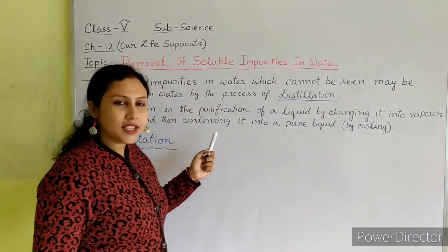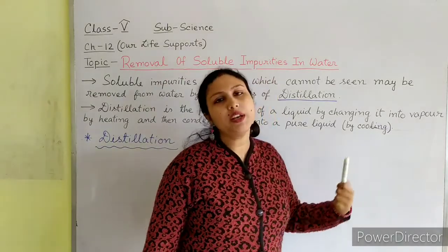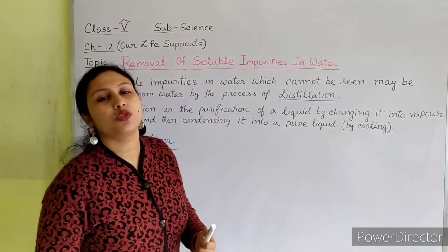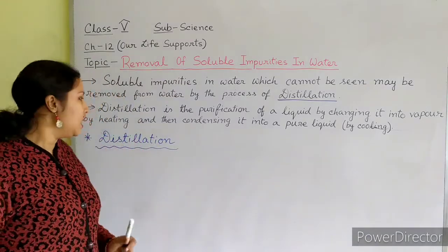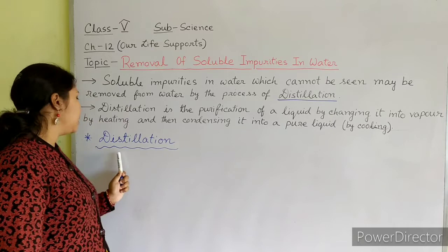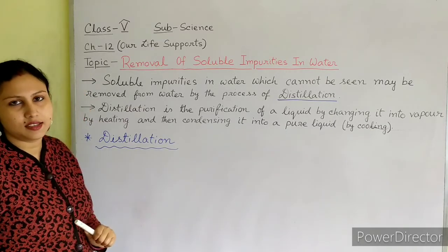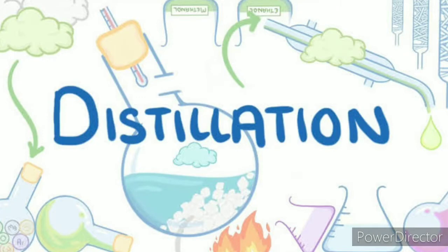So students, now we will learn in detail the process of distillation. In distillation, impure water is heated till it starts boiling. On boiling, the water evaporates and the impurities remain behind.